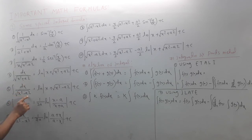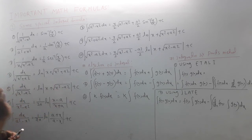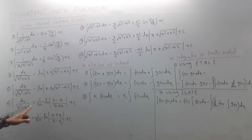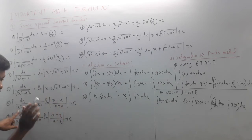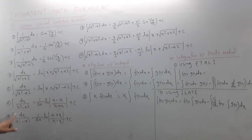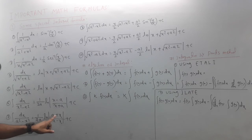For dx/(x²-a²): the formula is (1/2a)·ln|(x-a)/(x+a)| + c. For dx/(a²-x²): the formula is (1/2a)·ln|(a+x)/(a-x)| + c.